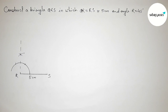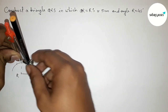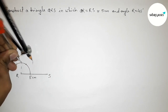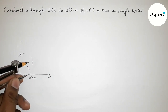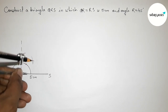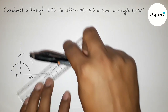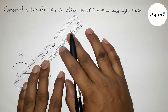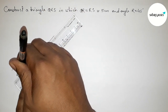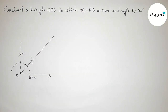Next we have to divide this angle. Putting the compass and taking greater than half of this arc, drawing an arc here. Putting the compass here and cutting. Joining this line to get the 45 degree angle. By this way you can first construct a 45 degree angle.